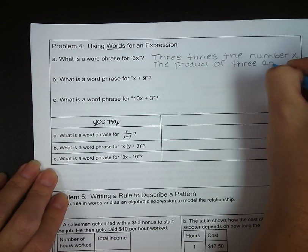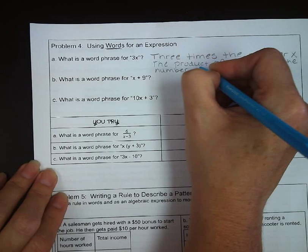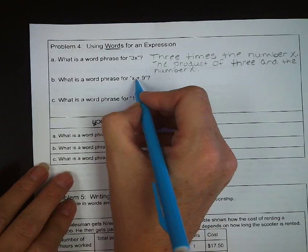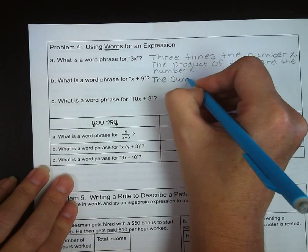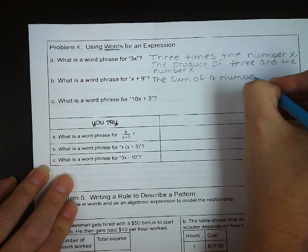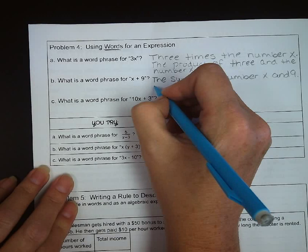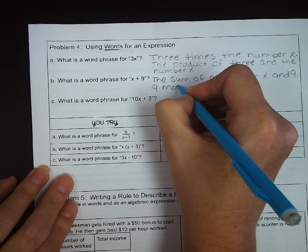So next up, we have letter B. What is a word phrase for what you see there, which is x plus nine? So you could say the sum of a number x and nine. You could say nine more than a number x. So those would both be valid answers.